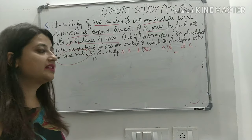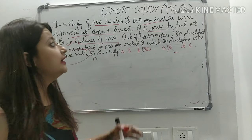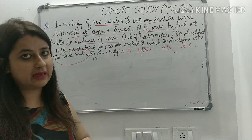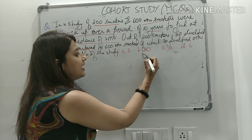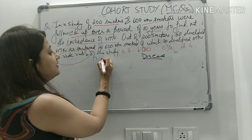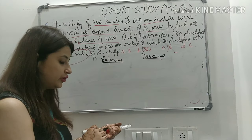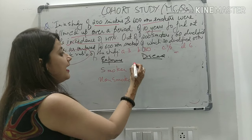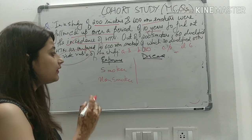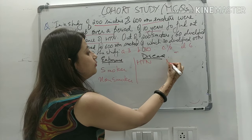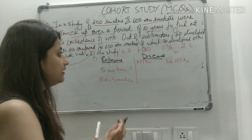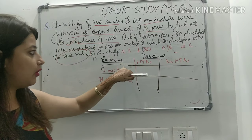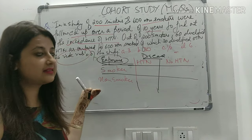To solve, make a 2×2 table. The exposure goes on one side (smoker / non-smoker) and the outcome on the other (hypertension / no hypertension), with totals. Always remember: outcome on this side, exposure on this side — this is the confusing point. Fill in the table: smokers total = 200, with hypertension = 60; non-smokers total = 600, with hypertension = 30.